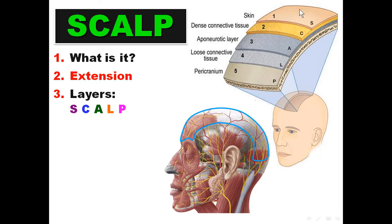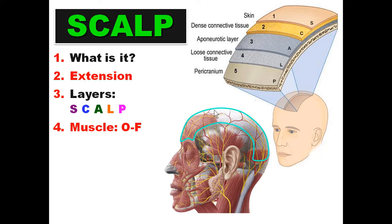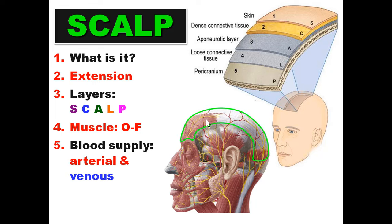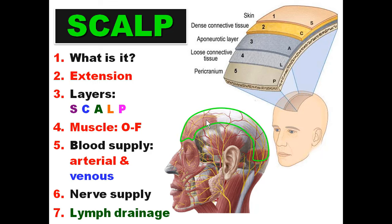The layers of the scalp — read the word SCALP: Skin, Connective tissue, Aponeurotic layer, Loose irregular connective tissue, and the Pericranium or the periosteum. Then we'll talk about the occipitofrontalis muscle, then the blood supply — arterial and venous — nerve supply, and lymph drainage.